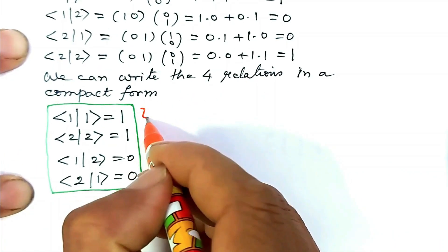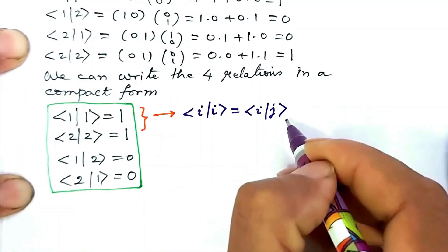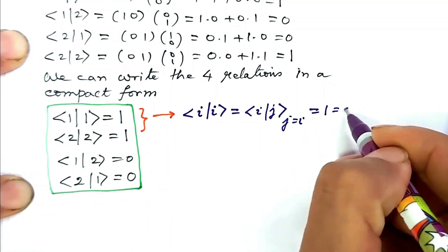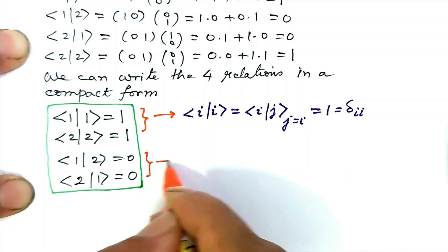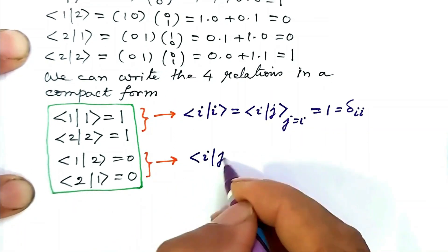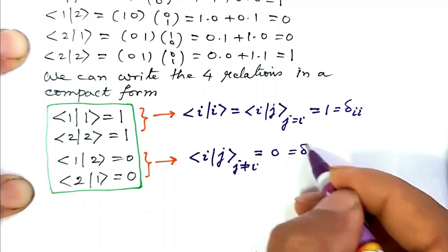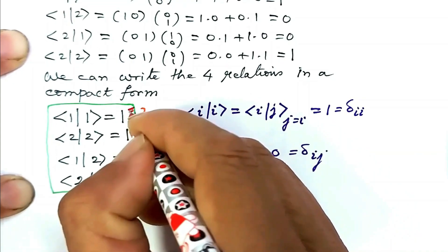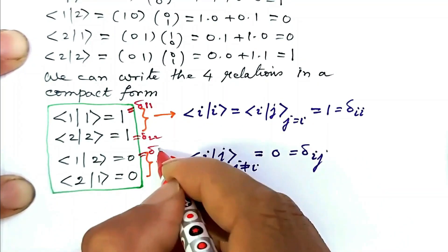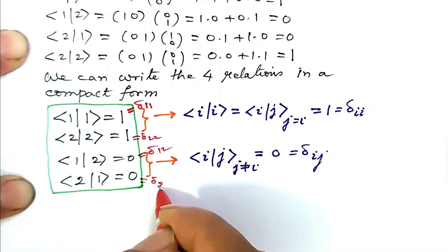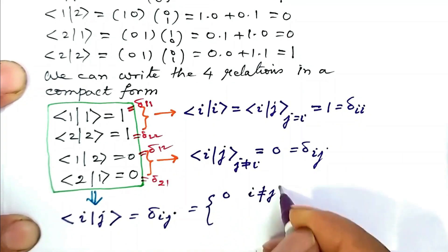The first two relations, bra 1 ket 1 = 1 and bra 2 ket 2 = 1, can be written as bra i ket j with j = i, equal to the Kronecker delta δ_ii = 1. The other two relations, bra 1 ket 2 = 0 and bra 2 ket 1 = 0, can be written as bra i ket j with j ≠ i, equal to Kronecker delta δ_ij = 0. In fact: bra 1 ket 1 = δ₁₁, bra 2 ket 2 = δ₂₂, bra 1 ket 2 = δ₁₂, bra 2 ket 1 = δ₂₁.